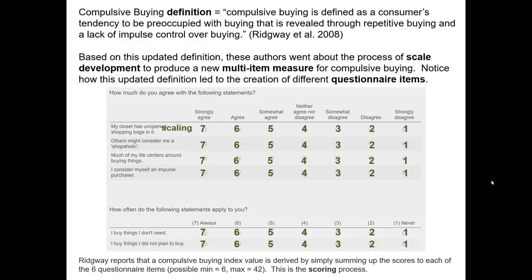This time, higher scores correspond with more compulsive buying indication. For example, look at that first question: My closet has unopened shopping bags in it. If you strongly agree, you'd score a seven. Ridgeway's scoring process was much easier than the one Faber and O'Quinn proposed — Ridgeway says simply to sum up the scores for all six questions. So if someone strongly disagreed to all six questions, they would score a six, the lowest possible score, whereas if someone strongly agreed to all questions they'd get a maximum score of 42.